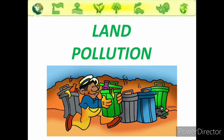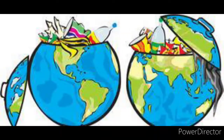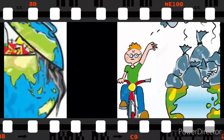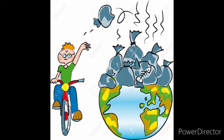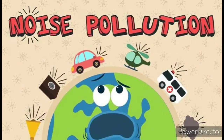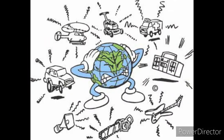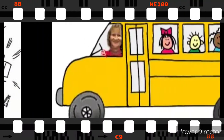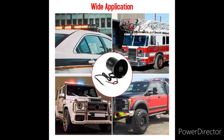Now land pollution: land or soil gets polluted when harmful substances are released into it, causing harmful effects. Now noise pollution: excessive and unpleasant sound in our environment is called noise or sound pollution. Such pollution can cause so many ill effects on us, and the pollutants may be many — sounds of all these things you can see on the screen.